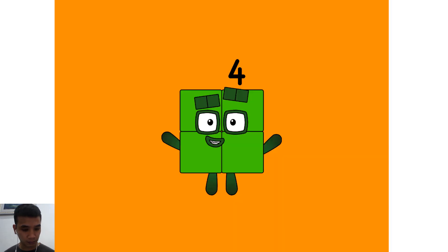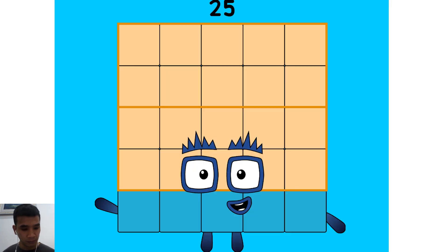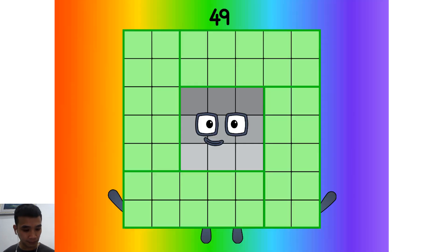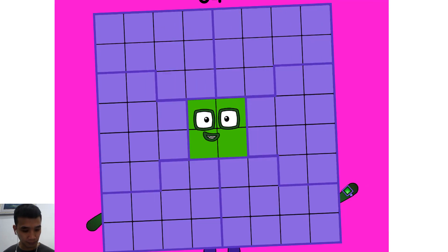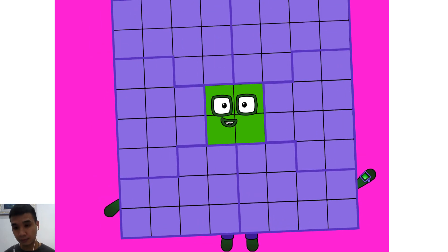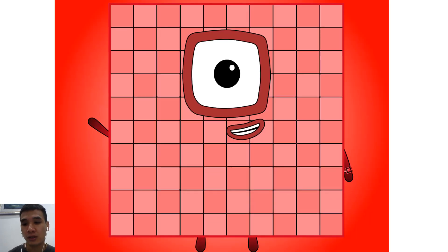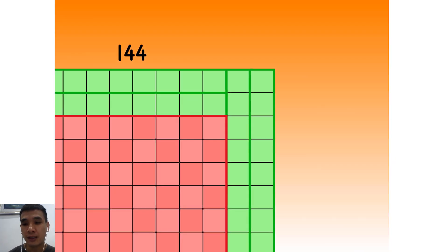1, 9, 16, 25, I am 36, 49, 8 by 8 is 64, I am 81, 125, 121, 144.